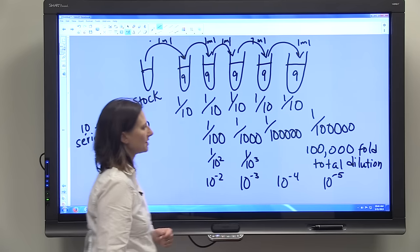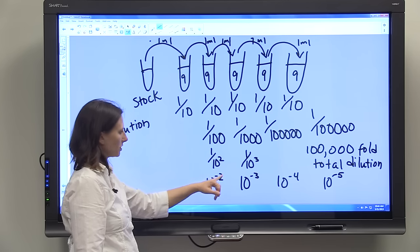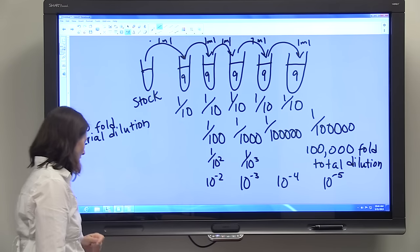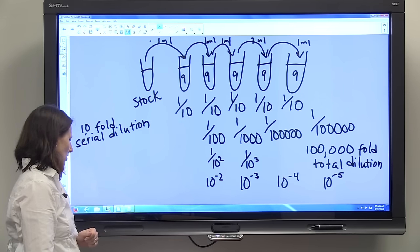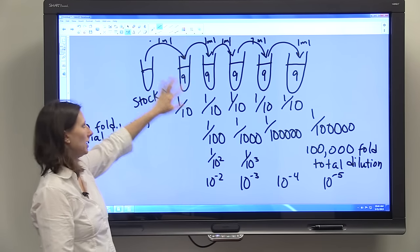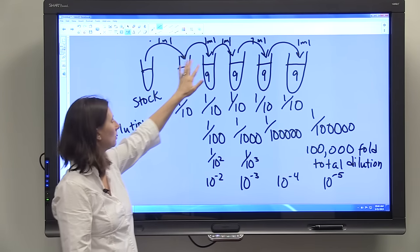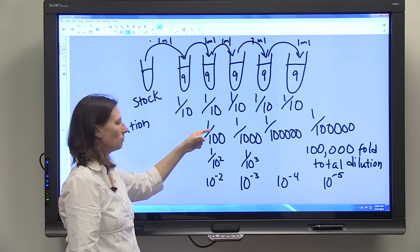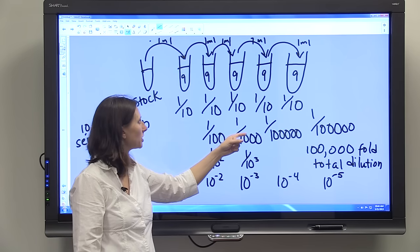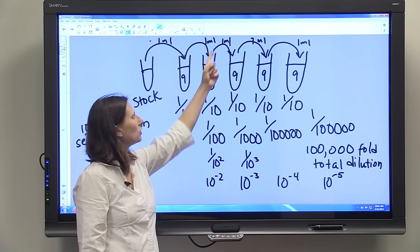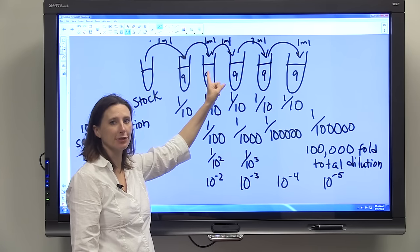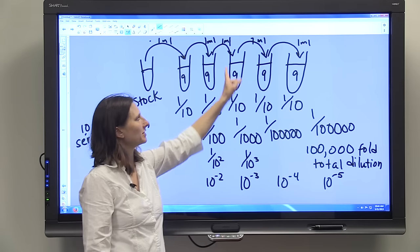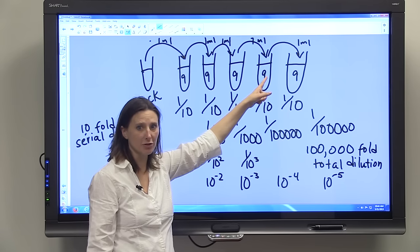If you remember your scientific notation rules, this means one over ten to the second by having a negative exponent. So you see how each time we're diluting the same dilution factor, but we're getting more and more diluted solution because we're taking one ml of a diluted solution into nine mils of diluent and then taking one more mil of that even further diluted solution.